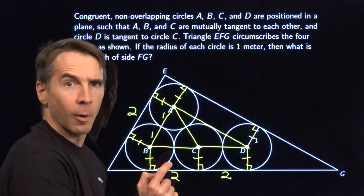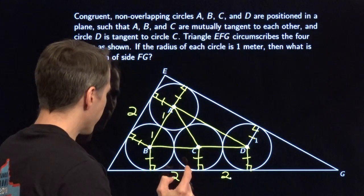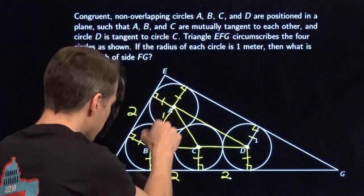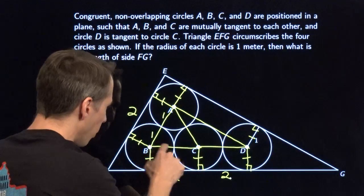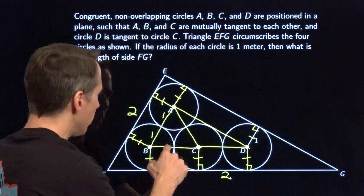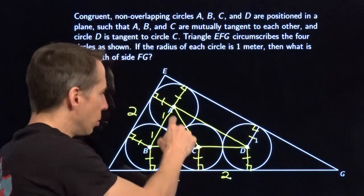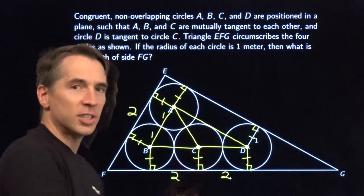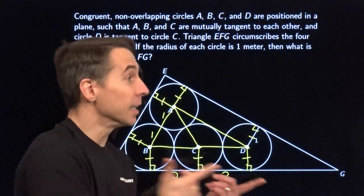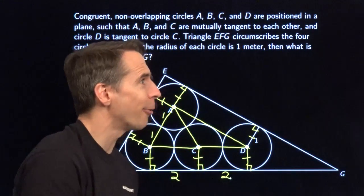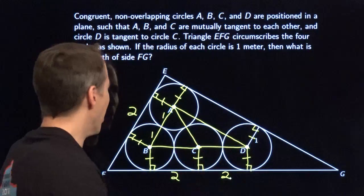Now what? This has length one, this is length one — one and one. That means AB is two, BC is two, AC is two. Triangle ABC is equilateral, Harv. Yeah, yeah, I know you know.